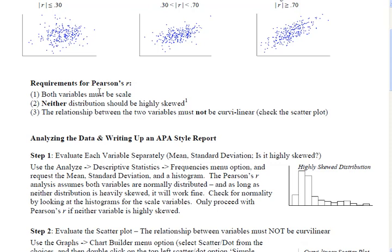Number two, neither distribution should be highly skewed. Pearson's R works where the assumption is normality of the distribution. The distributions are normally shaped. If they're highly skewed, then that assumption is violated. And number three, the relationship between the two variables must not be curvilinear.